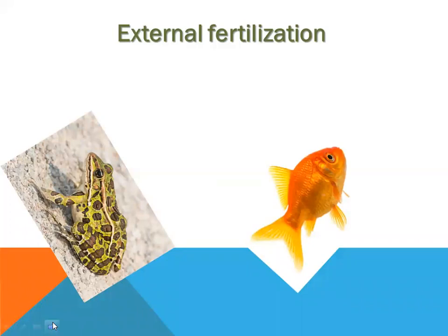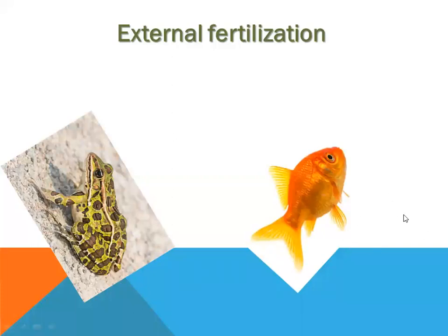External fertilization is when the male releases sperm in a medium and the female releases the egg, and fertilization takes place in that medium. This is seen in lower organisms — fishes and amphibians. The male fish releases sperm and the female fish releases the egg inside the water, and fertilization takes place inside the water. Similarly, the male and female frog release a mucilous mass containing egg and sperm.